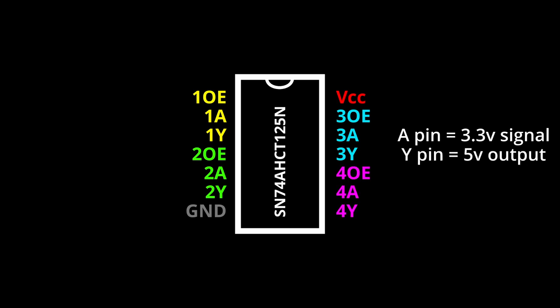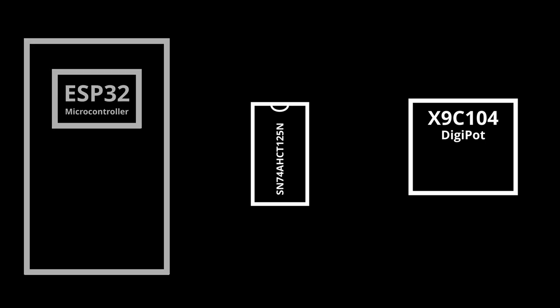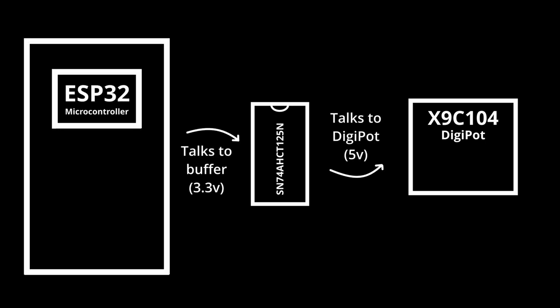and then it has 4 groups of 3 pins where the A pin would be the 3.3 volt logic, and the Y pin would be the same signal as on the A pin, but at 5 volts. The third pin can just be tied to ground. After connecting the bus buffer as a middleman between the microcontroller and the digipot, I can now be confident that the digipot is getting clear signals on its input pins.